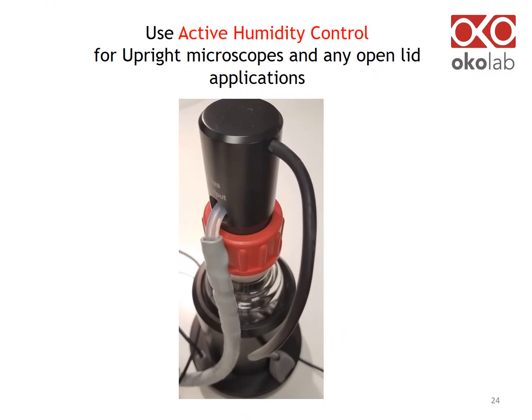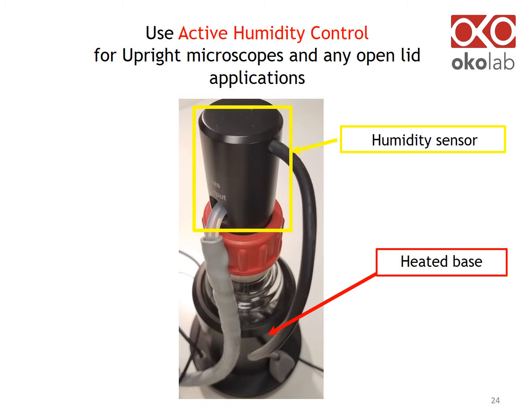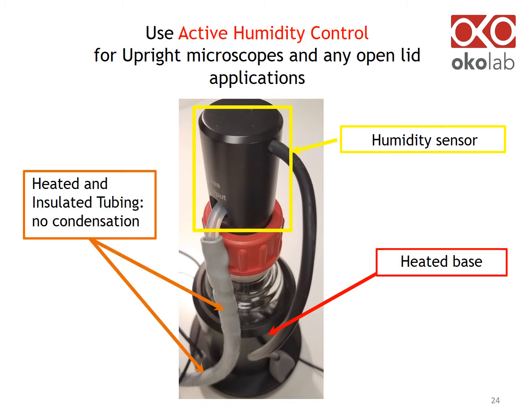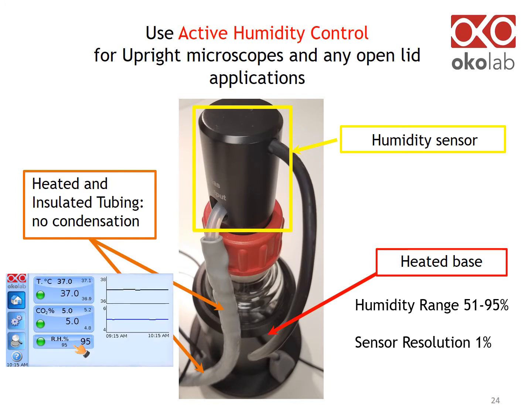This slide shows the active humidity module, which includes a heated base and humidity sensor lid. Humidified gas is delivered to the sample through heated and insulated tubing, avoiding condensation. Using the touchscreen interface, you can select the percentage of humidity you want to deliver to the sample in the range of 51 to 95%.